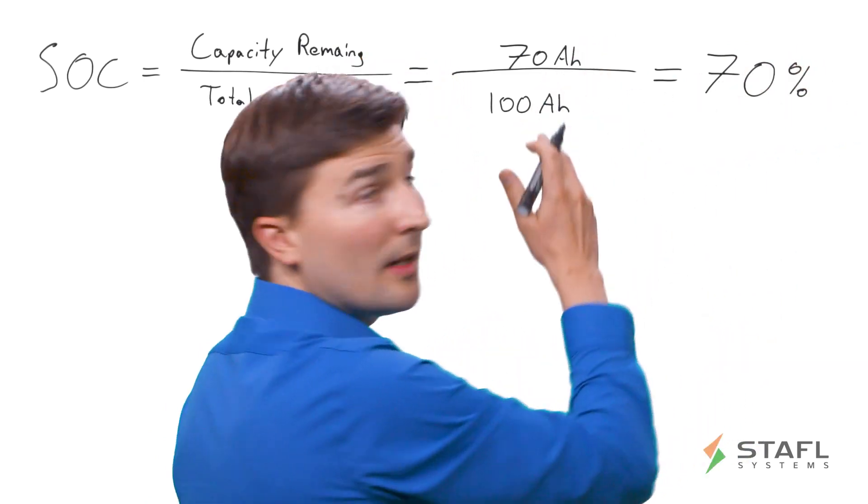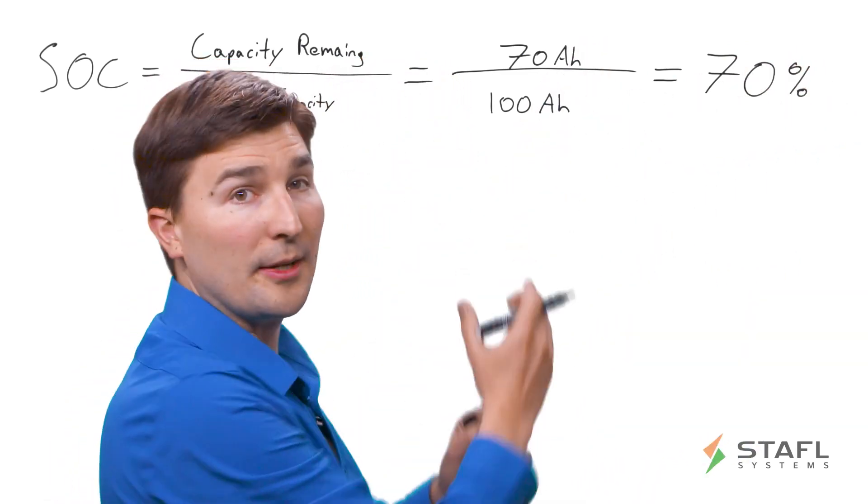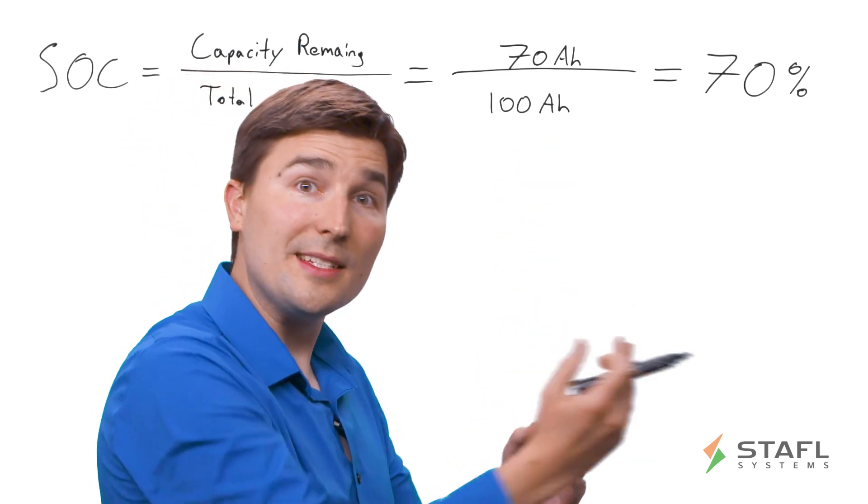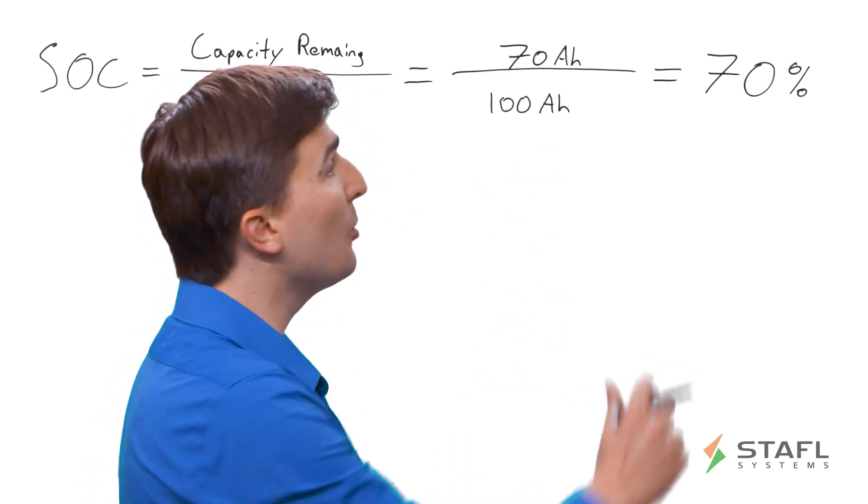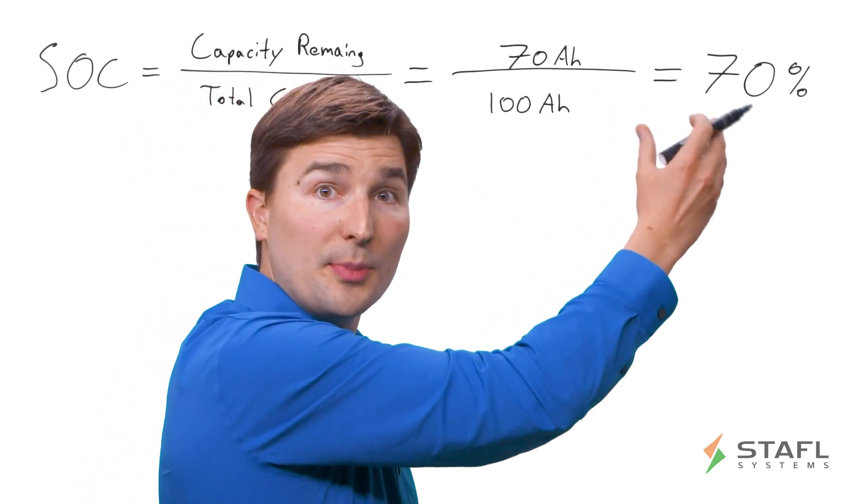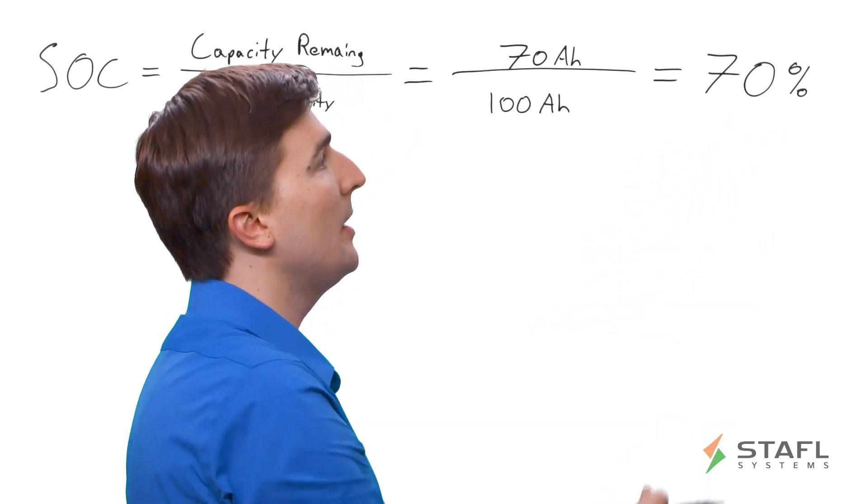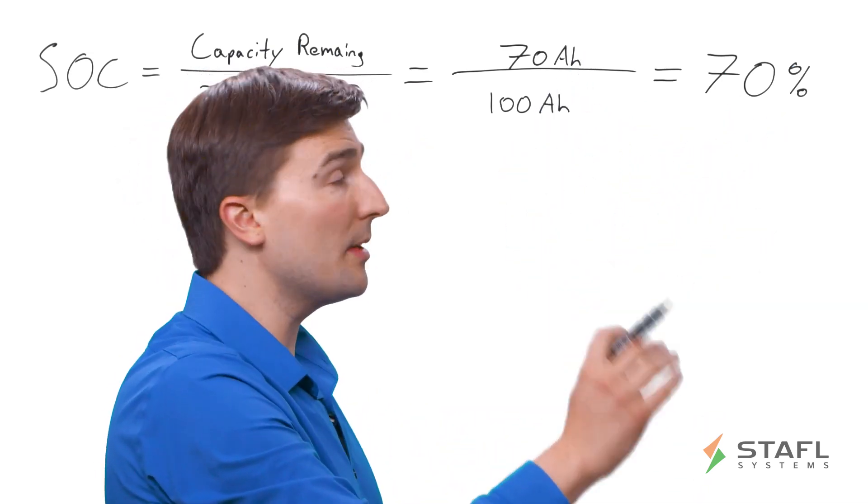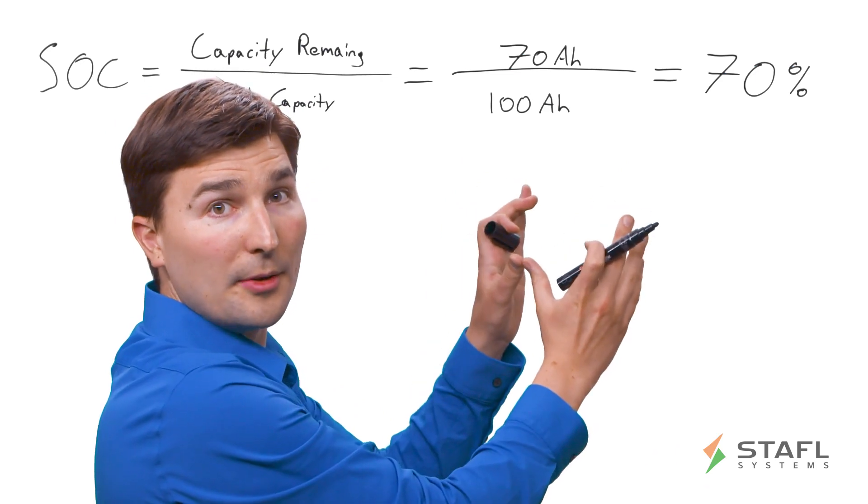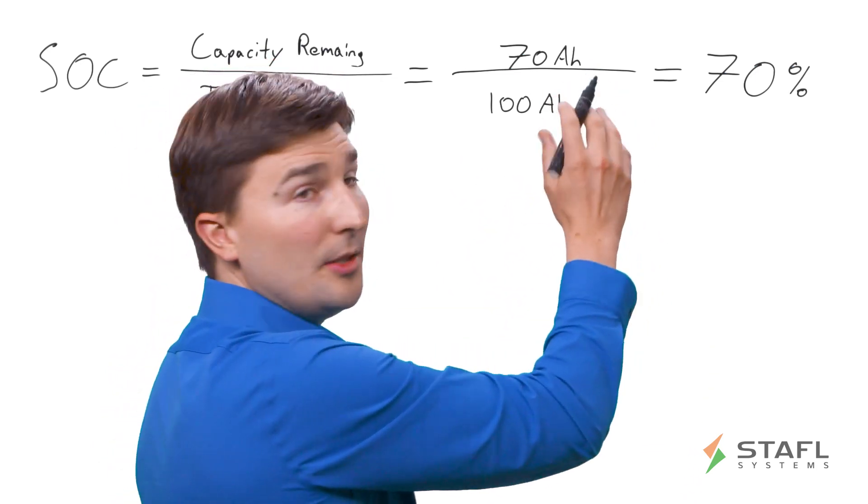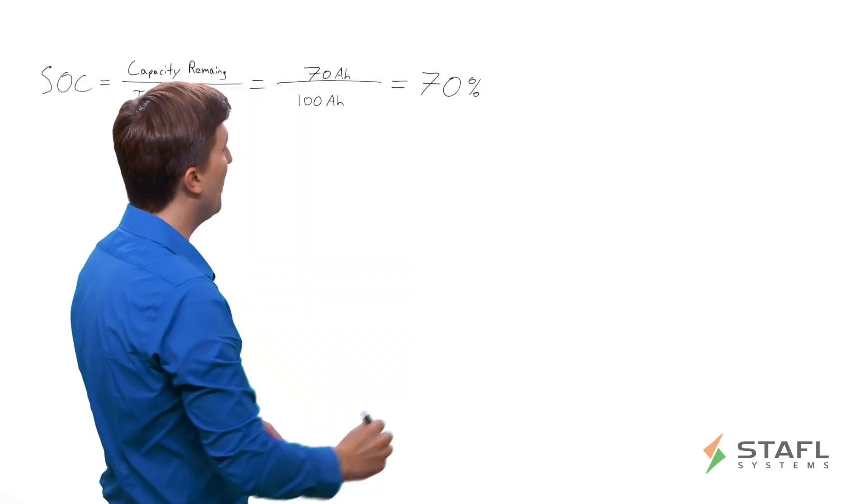This would mean that if we fully charge the battery pack up to the full 100 amp hours, and then discharge 30 amp hours, we would have 70 amp hours, or 70% of the capacity remaining. Now, it's very important to note that this is in units of amp hours, not in units of energy.